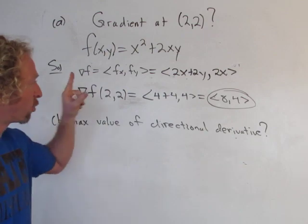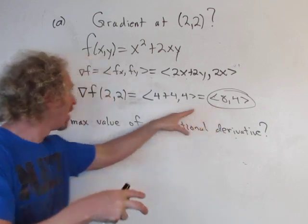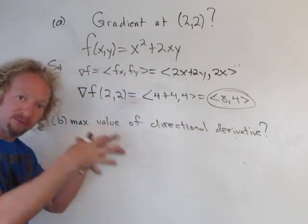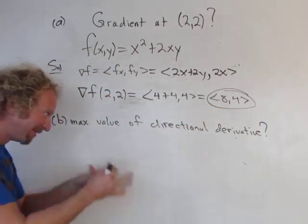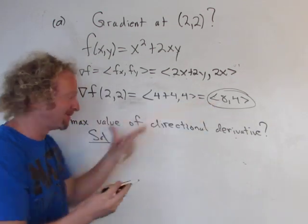We want the maximum value of the directional derivative. So since the gradient vector points in the direction of maximum increase, all we do is we take the magnitude of the gradient to find the maximum value of the directional derivative. Alright, so all we do is take the magnitude of this guy.